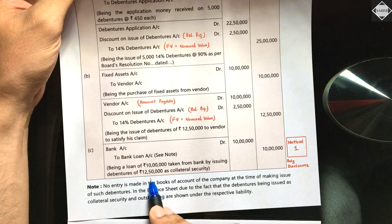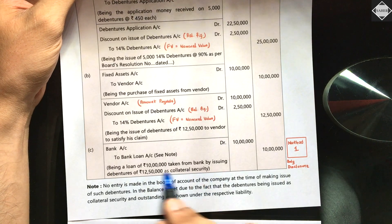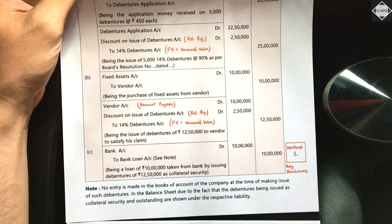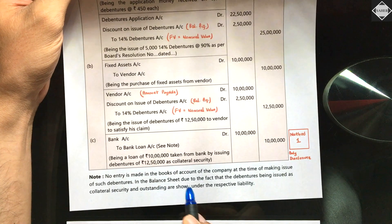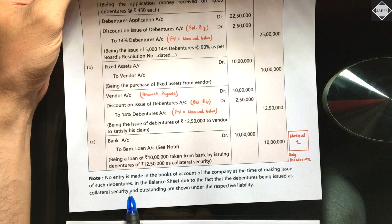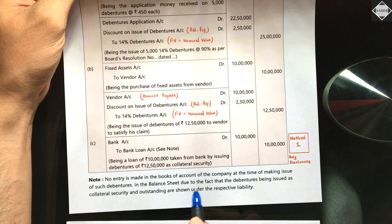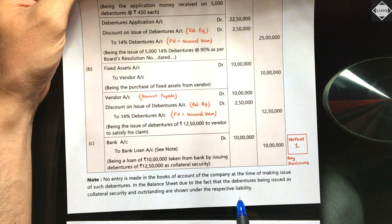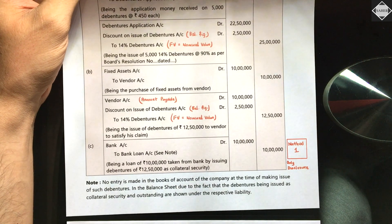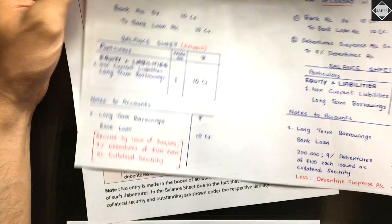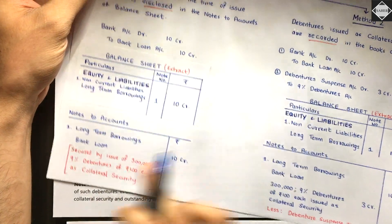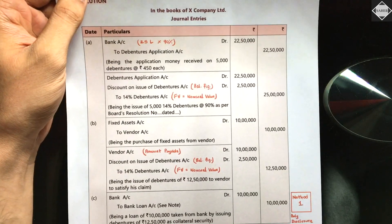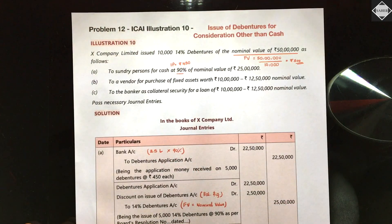In the balance sheet, the bank loan of 10 lakhs appears, with a note in brackets: 'secured by issue of debentures worth 12 lakhs 50,000 face value rupees 500 each.' No entries are made in the books at the time of issuing debentures as collateral security. The debentures outstanding are shown under the respective liability heading. That's all for this video — simple and straightforward. See you in the next video.